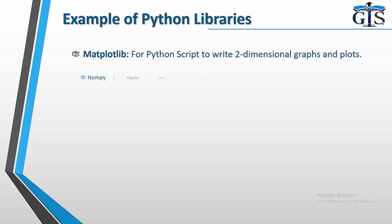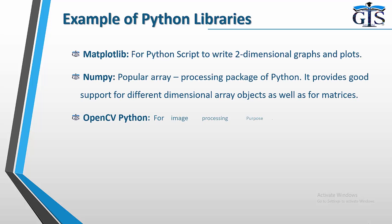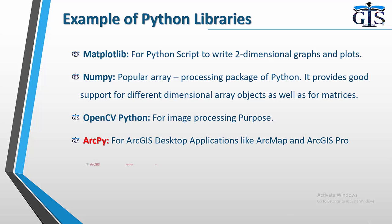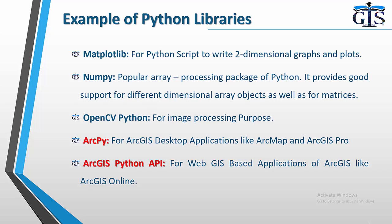Let's look at some examples of Python libraries. First is matplotlib, which is used to write two-dimensional graphs and plots. Next is numpy, a popular array processing package that provides support for multi-dimensional array objects and matrices. There is also opencv for image processing. For our ArcGIS work, arcpy is used for desktop applications like ArcMap and ArcGIS Pro, and the ArcGIS Python API is for web GIS applications like ArcGIS Online.